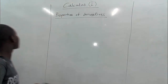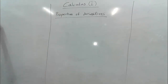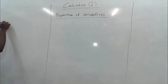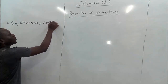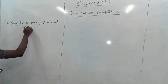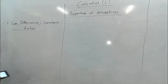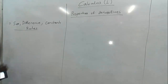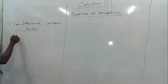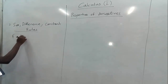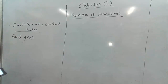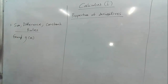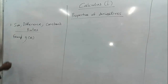Starting with the sum, difference, and constant rule. For sum and difference, we have two functions f and g, all of which are defined. When we have their sum and difference, or if they are constants, and we are trying to differentiate them, we use the following rules.